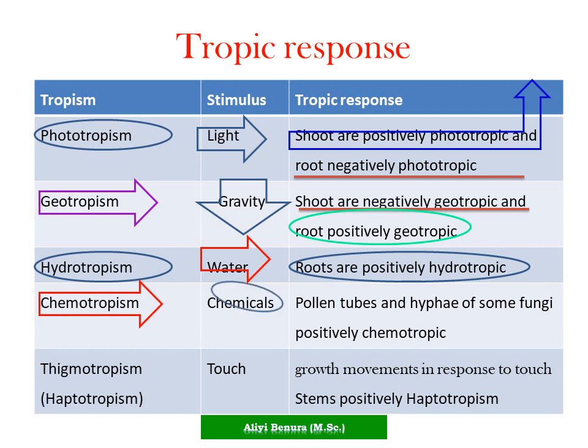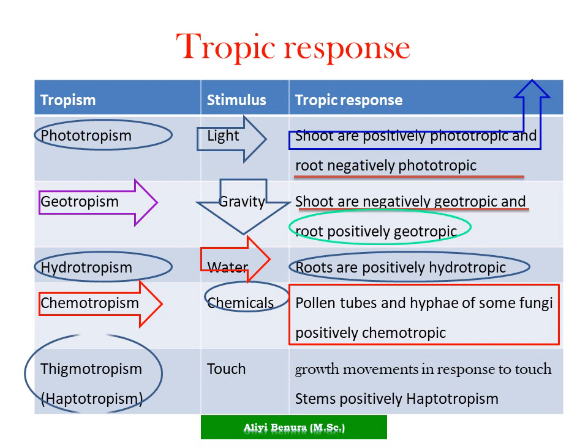Chemotropism - a chemical is the stimulus. Pollen tubes and hyphae of some fungi are examples of positively chemotropic organisms.